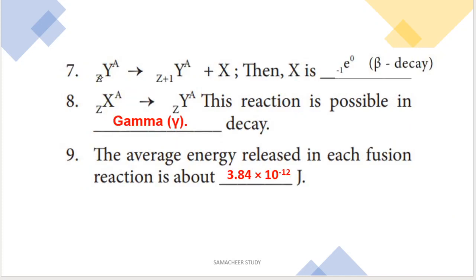Next: a reaction is given where parent element ZXA gives a daughter element Y plus X. The daughter element Y has its atomic number increased by one, while the mass number remains the same. This indicates beta decay. In beta decay, the atomic number of the daughter element increases by 1. So X represents minus 1E0 (a beta particle / electron).